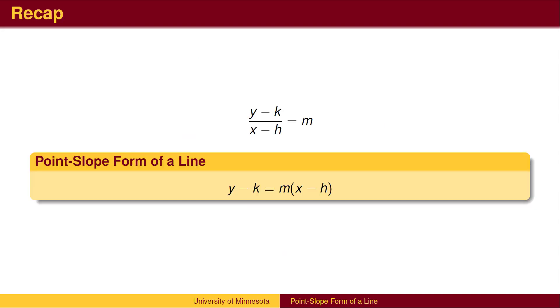To recap, the point-slope equation of a line with slope m through the point (h, k) is given by the formula: y minus the y-coordinate equals m times x minus the x-coordinate.